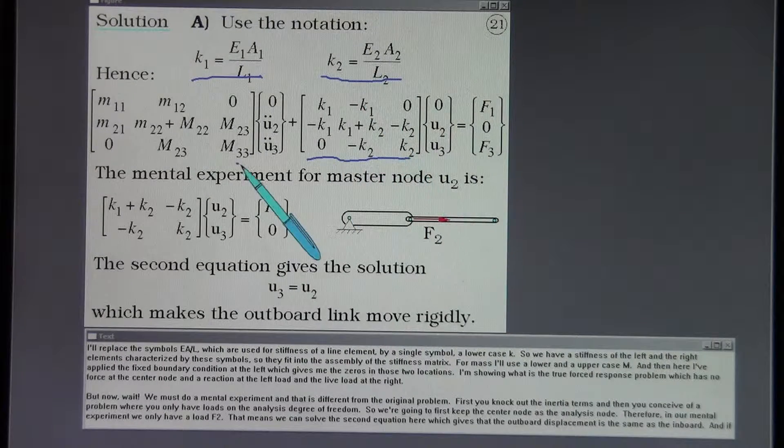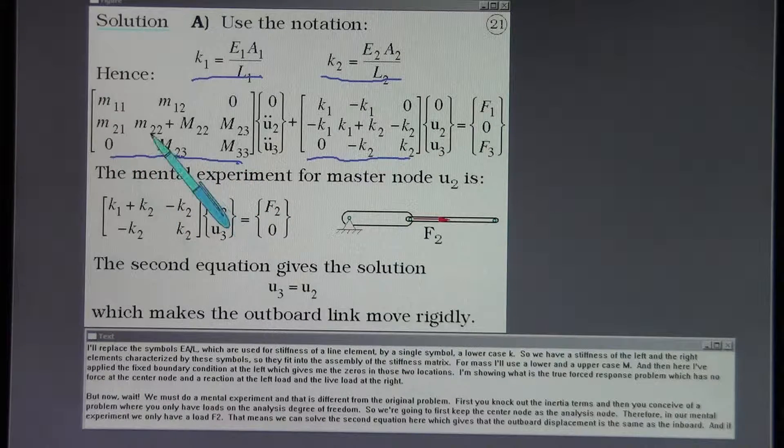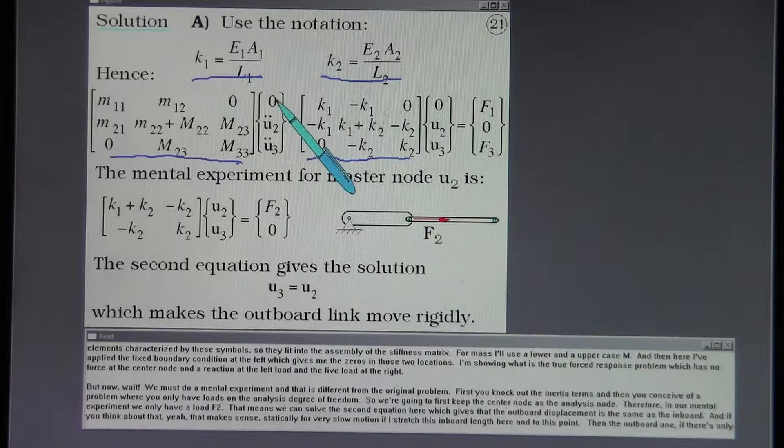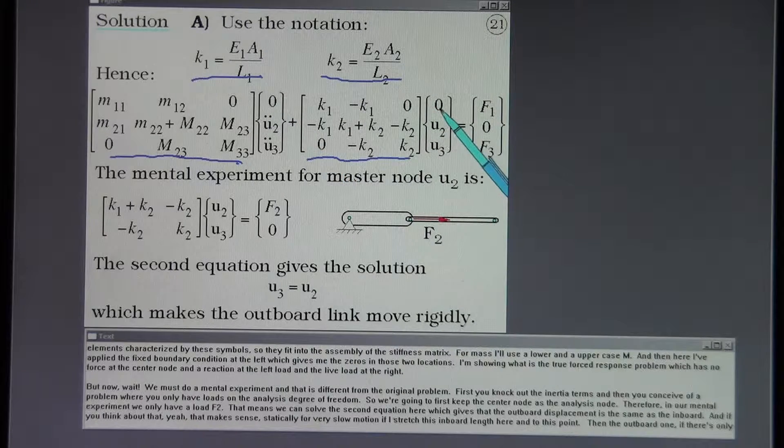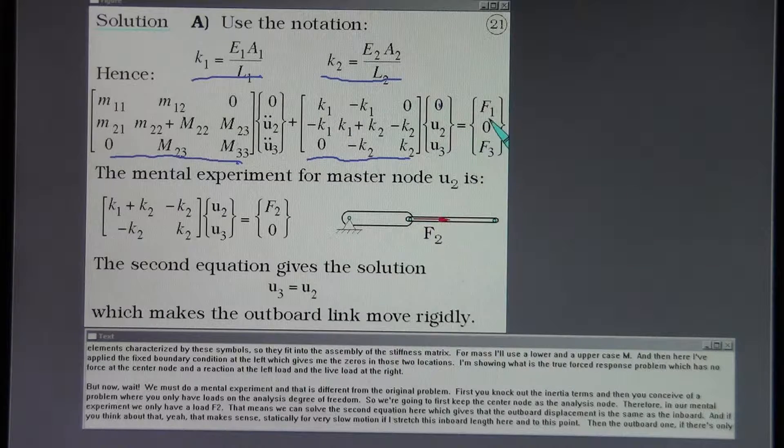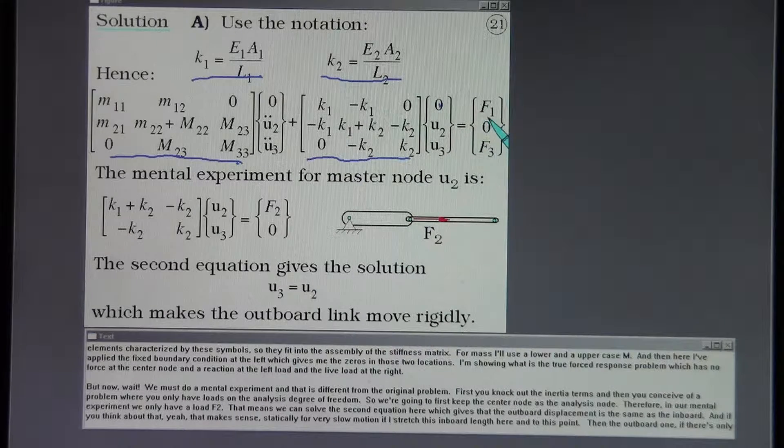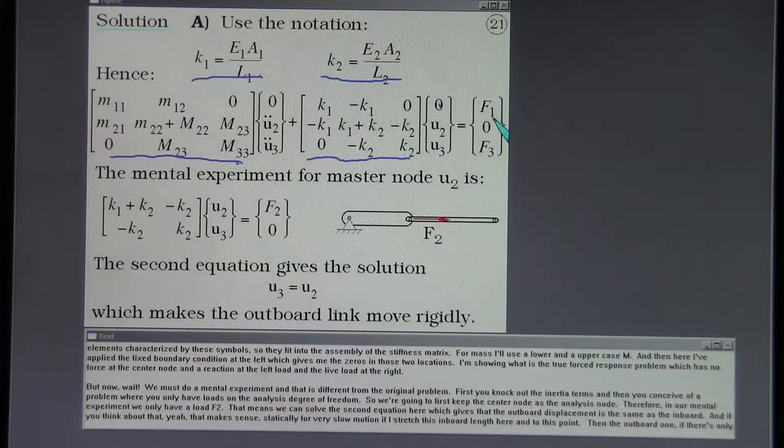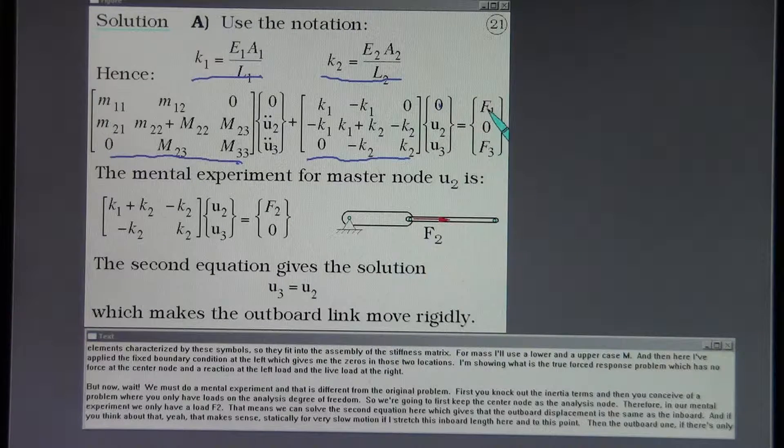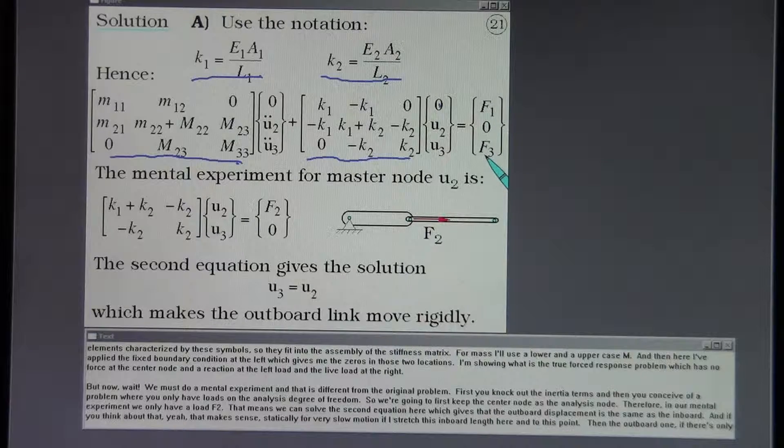For mass, I'll use a lower and an uppercase M. And then here I've applied the fixed boundary condition at the left, which gives me the zeros in those two locations. I'm showing what is the true forced response problem, which has no force at the center node, and a reaction at the left node, and a live load at the right.